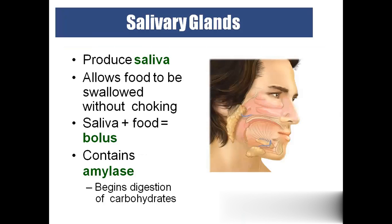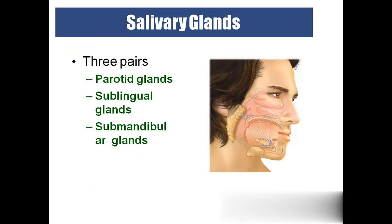The salivary glands produce saliva; saliva mixed with food forms bolus. Saliva contains the enzyme amylase, which helps digest carbohydrates. There are three pairs of salivary glands: the parotid (largest, just in front of the ear), the sublingual, and the submandibular.